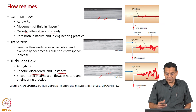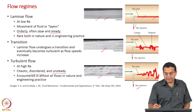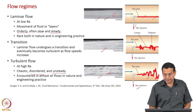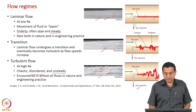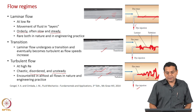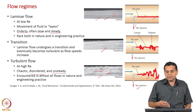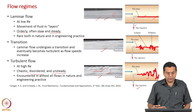Between these two extremes we have the transition flow regime. Looking at the photograph, the flow is somewhere in between the nice laminar behavior and highly disordered turbulent flow — that is why we call it transition. Laminar flow happens at low Reynolds number, turbulent flow at high Reynolds number, and in between you have a gradual transition.